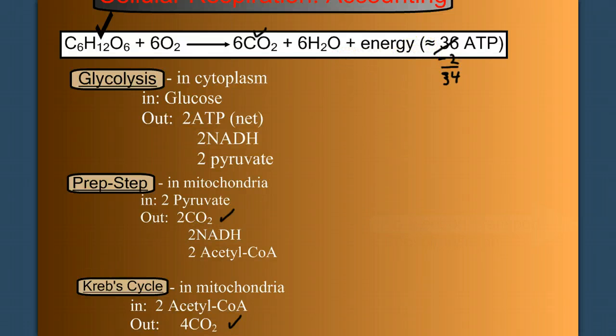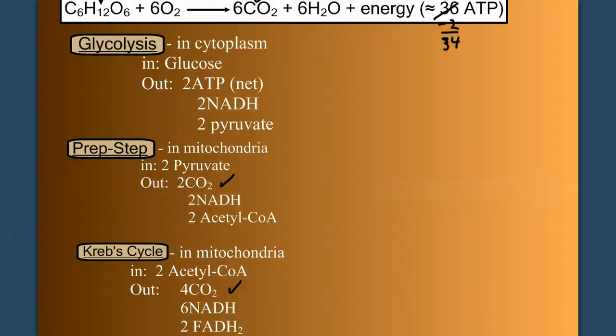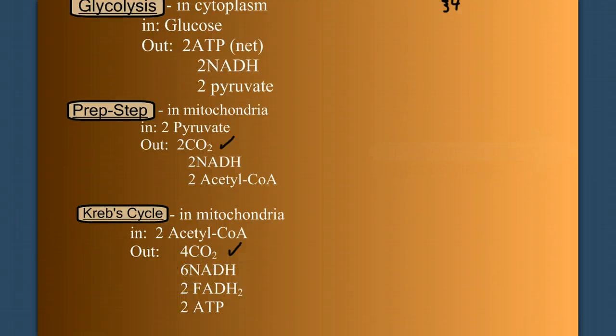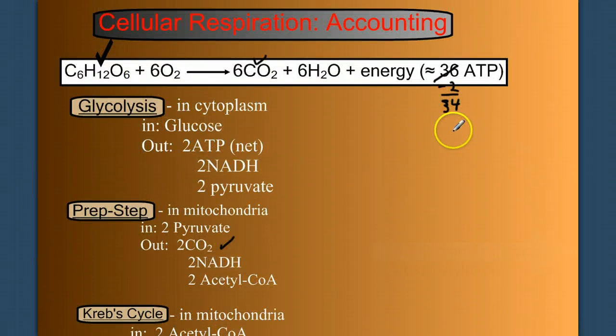Well, in the Krebs cycle, we make two ATP. So that's two more we can subtract from our total. So we still have about 32 ATP to make. But we have nothing left to break down. We've taken a six carbon molecule glucose and made six carbon dioxides.